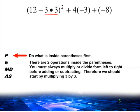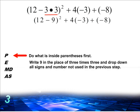We write the solution to 3 times 3, which is 9, right underneath 3 times 3, and we bring down every sign and every number that we did not touch in the previous step.